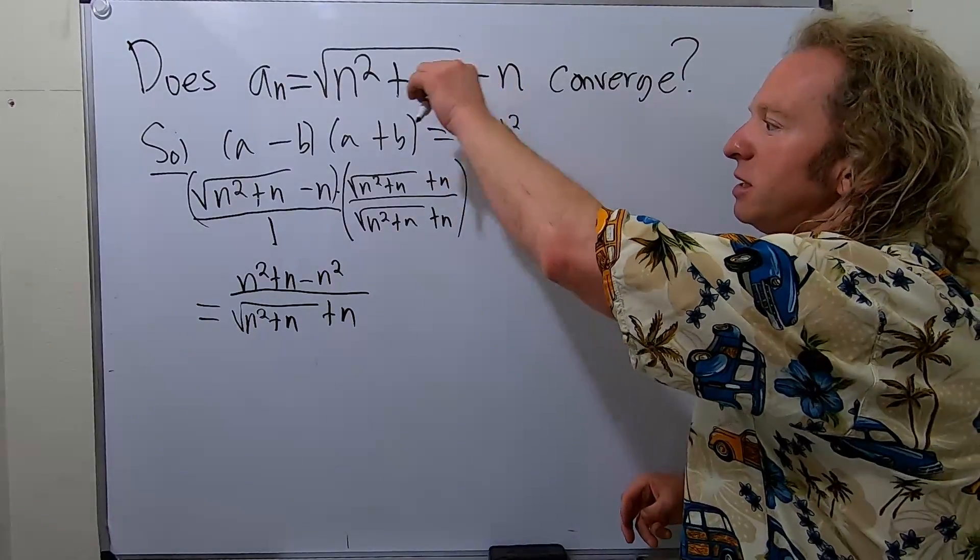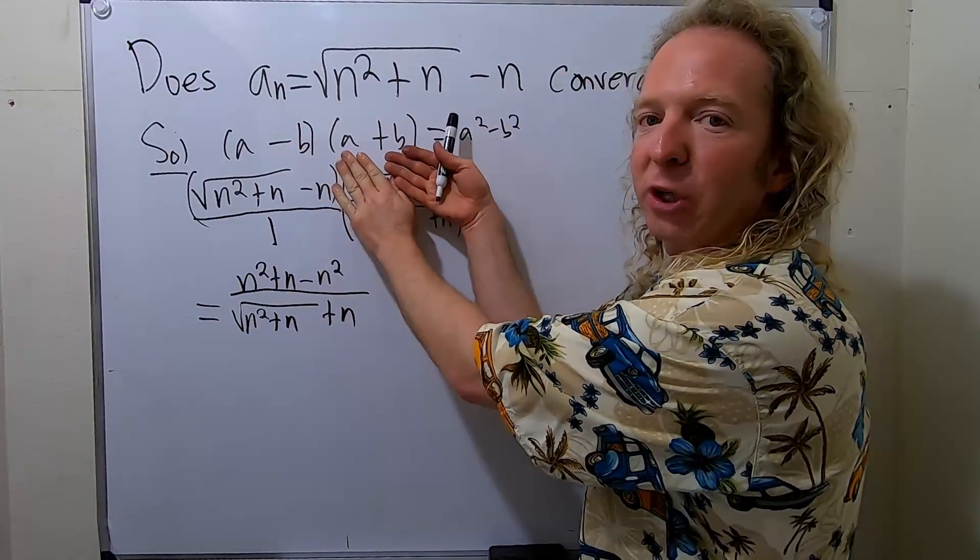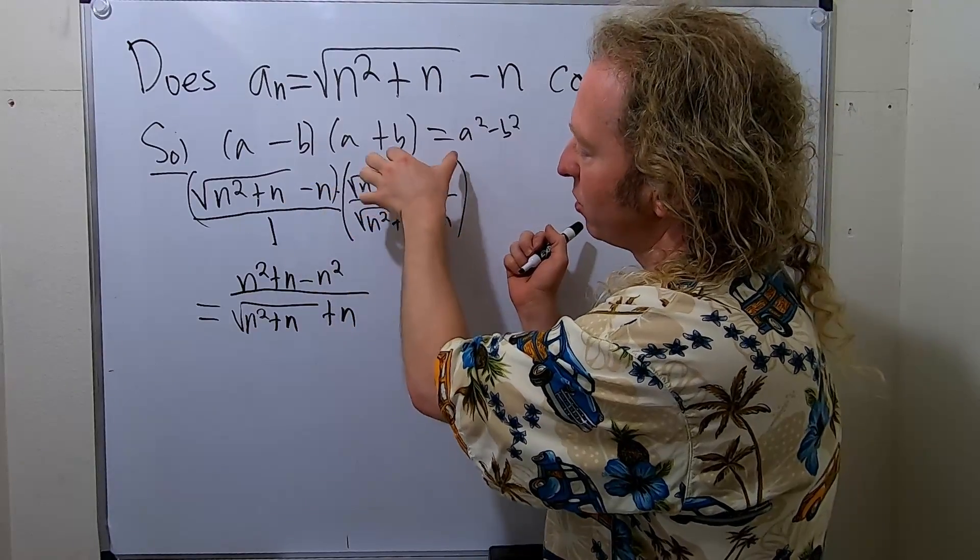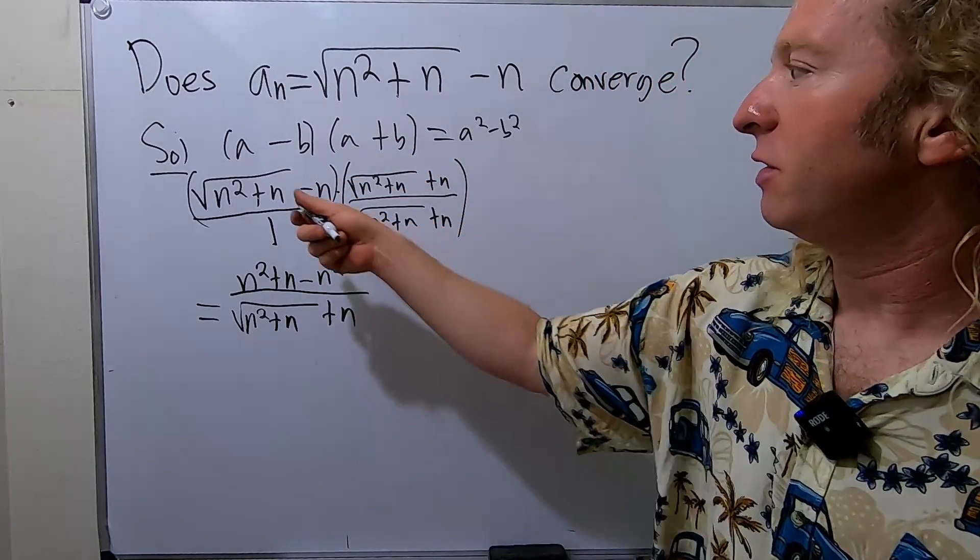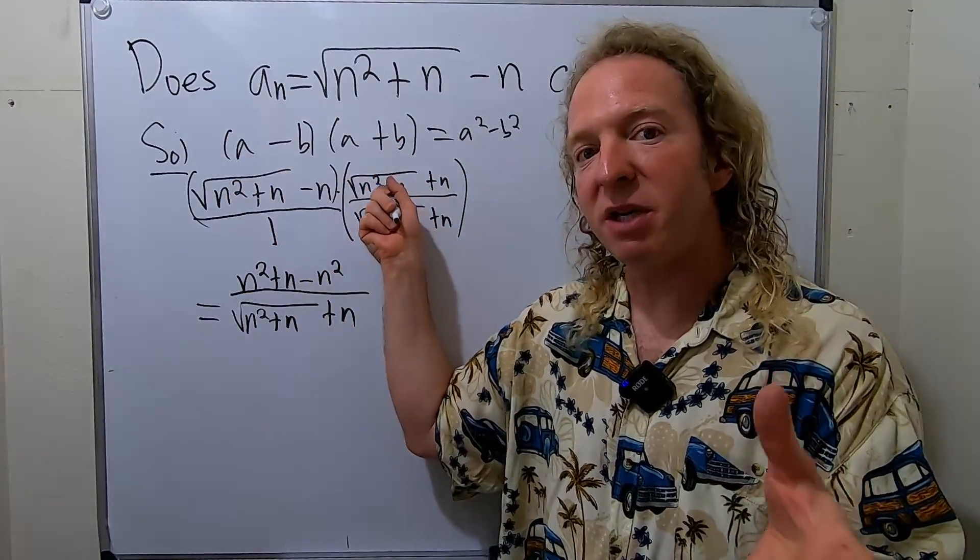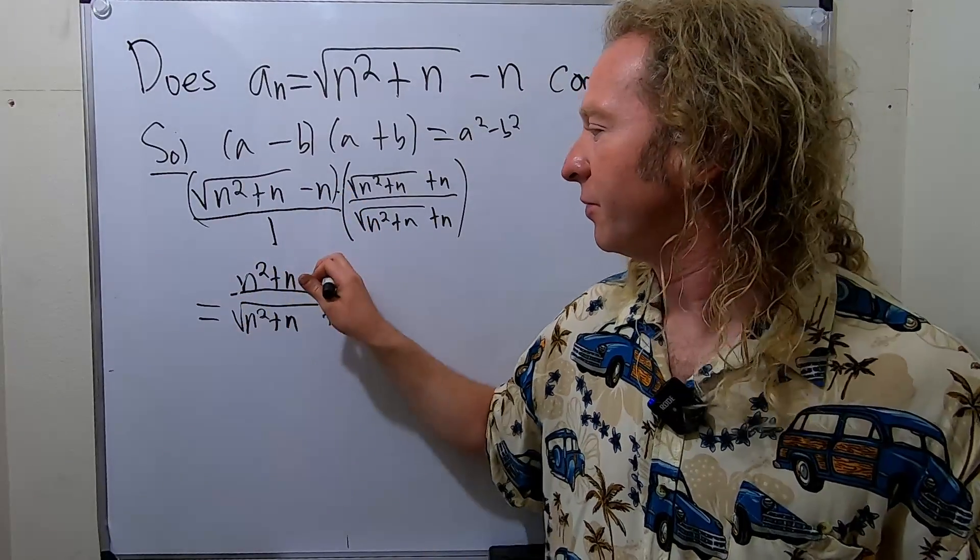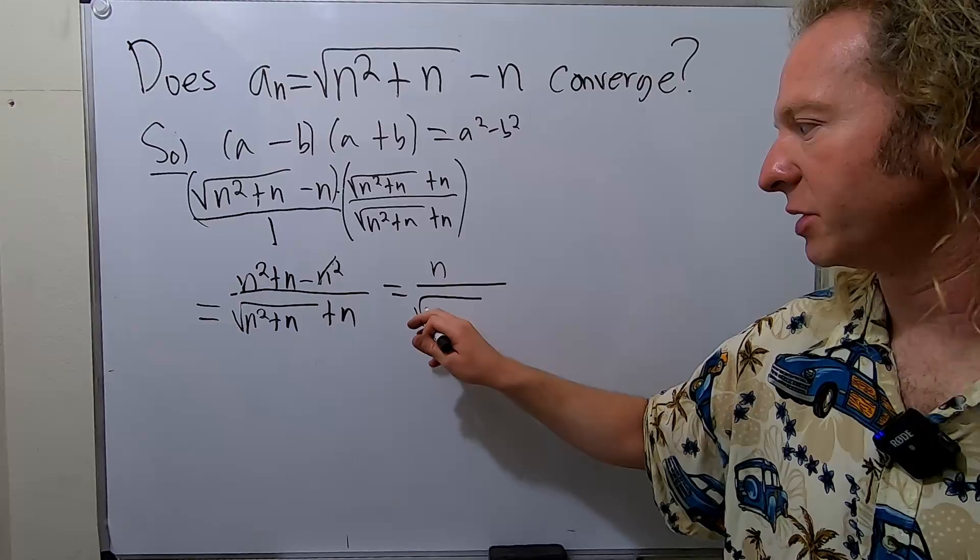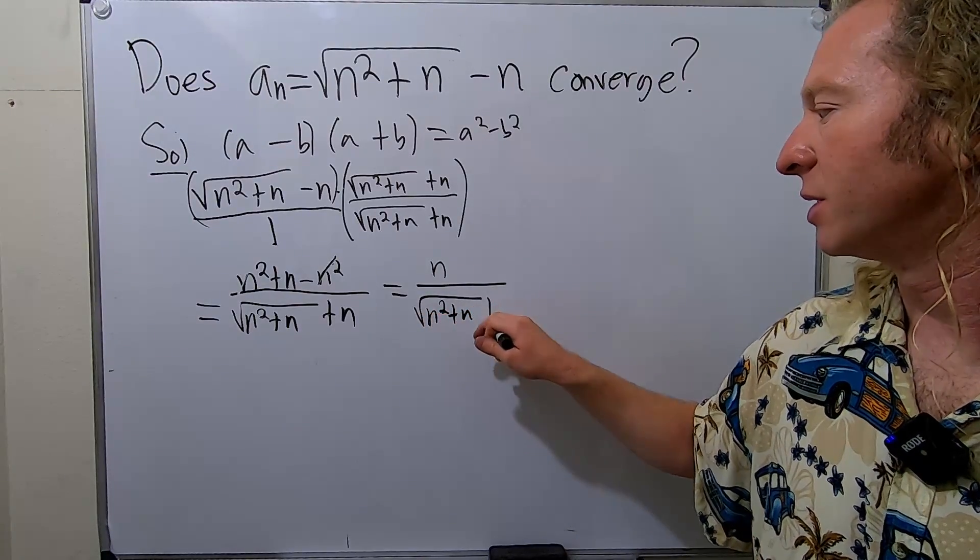Something like this, the idea again is to multiply by 1 in a clever way. You rationalize the numerator by turning that into a plus and writing it twice. Then it's a minus b, a plus b, which is a squared minus b squared. These cancel, so we're left with n over square root n squared plus n plus n.